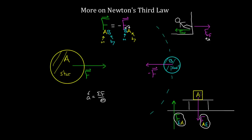Now for the other force — the force that the table was exerting: the force on box A exerted by the table. Finding the third law partner is easy — just reverse the labels. The partner force is a downward force on the table by box A. So there's a downward force on the table exerted by A, and that is the third law partner force to the upward force the table exerts on box A. These two forces are also third law partner forces and will always be equal and opposite no matter what happens.